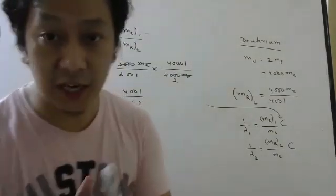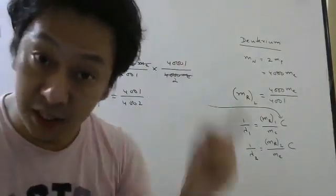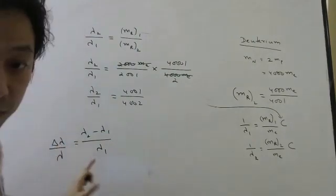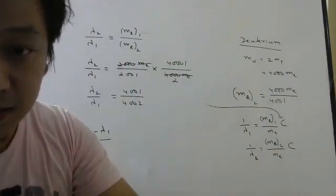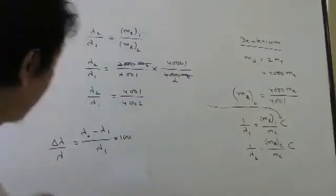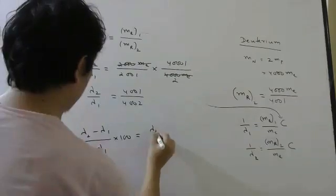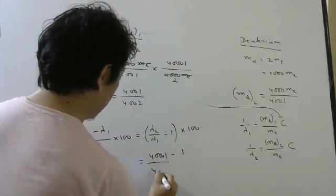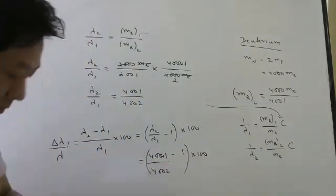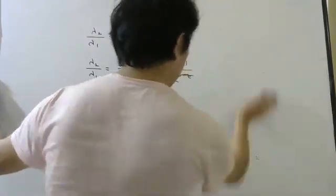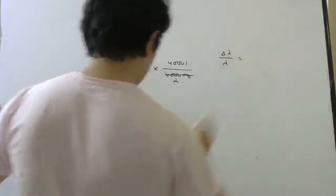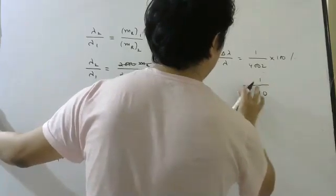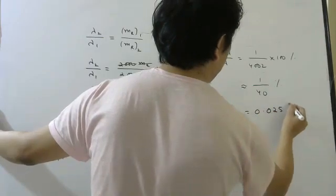Okay. Now they need the change. They told in the question very clearly, they are replacing hydrogen by deuterium. That means hydrogen is initial, deuterium is final. So I should calculate lambda two minus lambda one by lambda one. Everybody understood or not? We have to calculate this according to the question. Final wavelength minus initial wavelength by initial wavelength into 100 because they want in percentage. So that will be equal to. Now this I can write lambda two by lambda one minus one minus one into 100. So 4001 divided by 4002 minus one into 100. So the percentage change will be. This will be how much one divided by 4002 into 100 percent. This I can write approximately 1 by 40. 0.025.